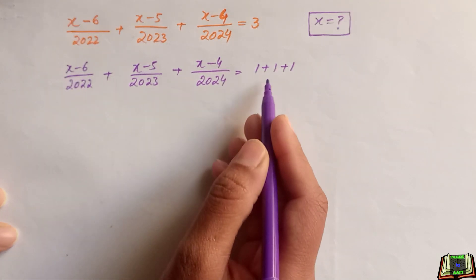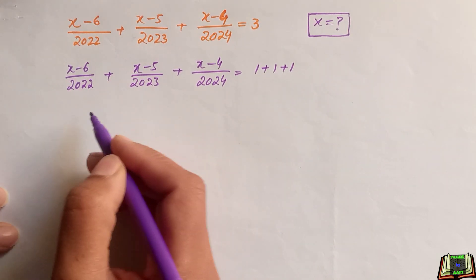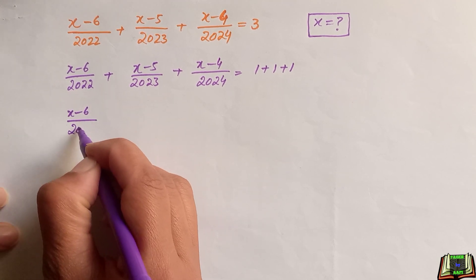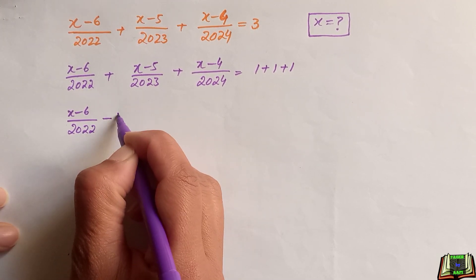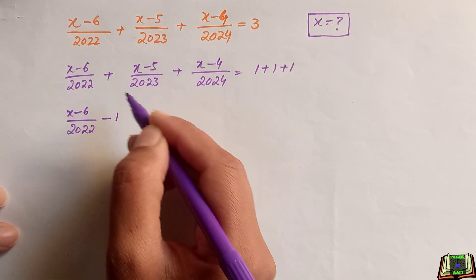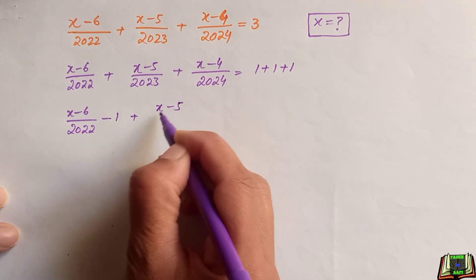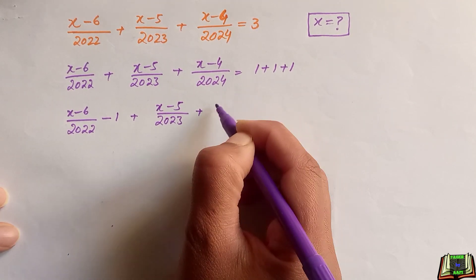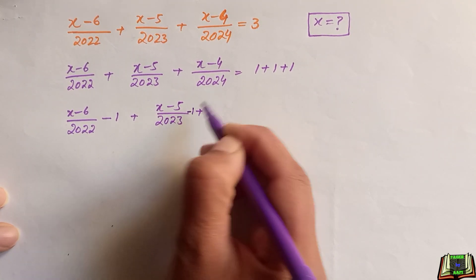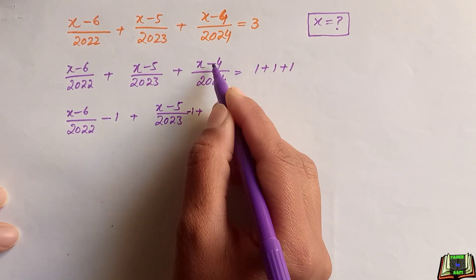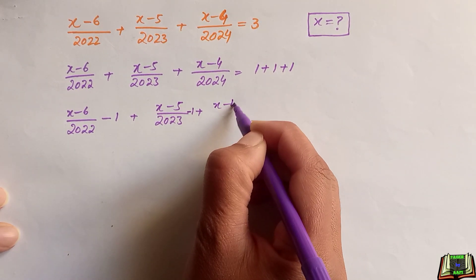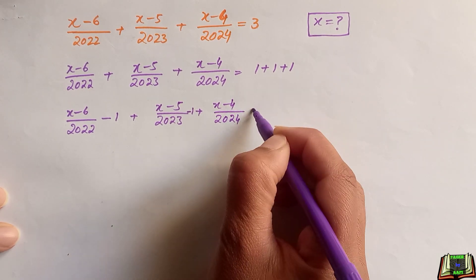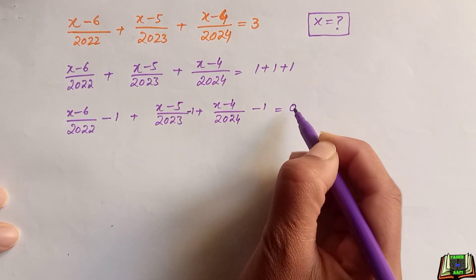In the next step, we are going to take each 1 to the left-hand side. So we get (x minus 6) divided by 2022 minus 1, plus (x minus 5) divided by 2023 minus 1, plus (x minus 4) divided by 2024 minus 1, is equal to 0.